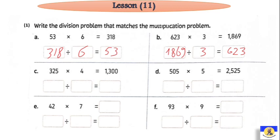We are going to say: dividend divided by divisor equals quotient. Letter C: 325 by 4 equals 1,300. If we have 1,300, we are going to divide by 4, which gives us 325. Next: 2,525 divided by 5 equals 505.